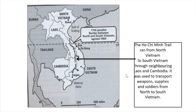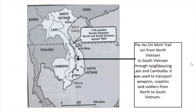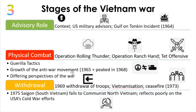Your teachers would have told you about the Ho Chi Minh Trail — the supply trail. North Vietnam is supporting the communist rebels in South Vietnam by sending aid, military weapons, medical care and supplies via the Ho Chi Minh Trail. The Ho Chi Minh Trail ran from North Vietnam to South Vietnam through the neighboring countries of Laos and Cambodia, and was used to transport weapons, supplies and soldiers from North to South Vietnam. Now, number three, we need to look at the stages of the war — understanding what we're going to speak about in our essay.